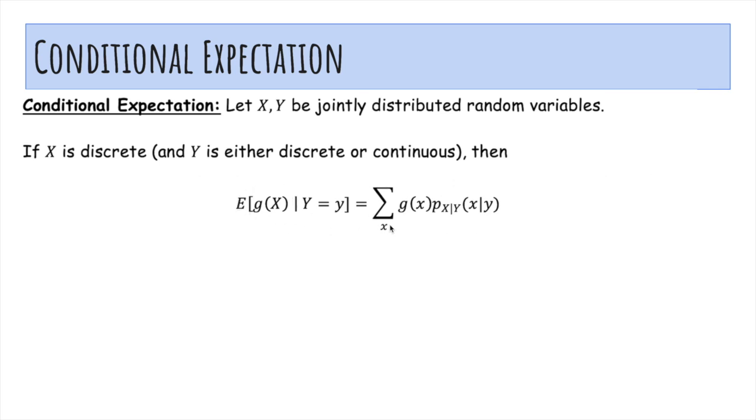So expected value of g(X) is the sum of g(x) times the probability of X equals x. Except now we're in the case where we're given Y equals y, so all we've done is replace p_X(x) with p_{X|Y}(x|y).